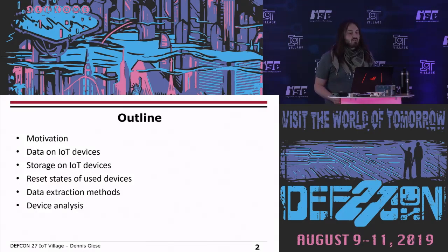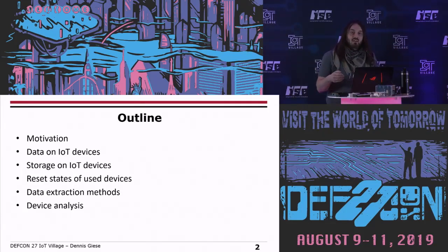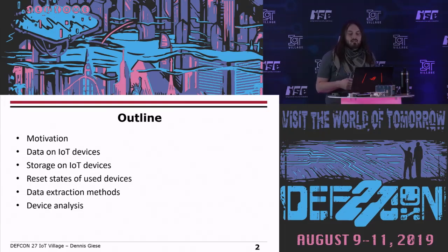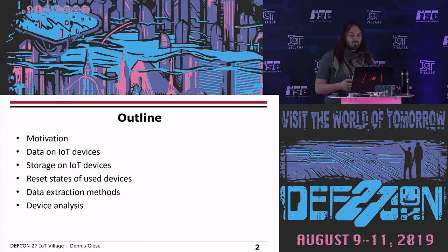The outline for this talk is the following: I start with the motivation, then I'll speak about what kind of data is stored on IoT devices and how it's stored. Then I'll cover what kind of reset states you can expect on a used device and what data may or may not remain. Next I'll talk about data extraction methods, and finally some example devices where I found data and identified previous owners.